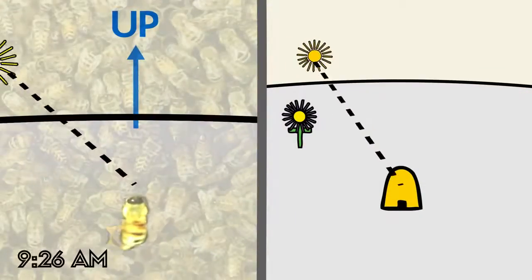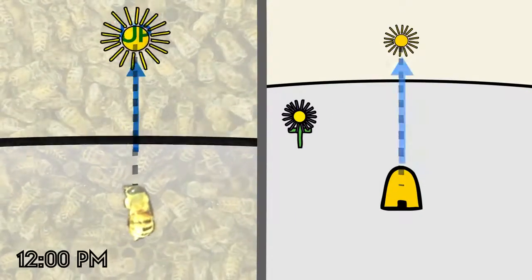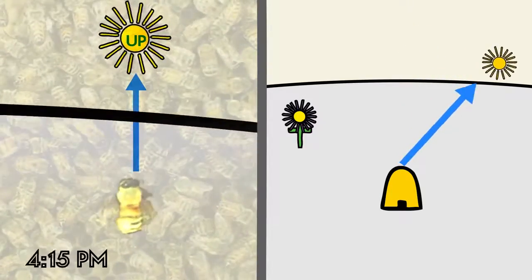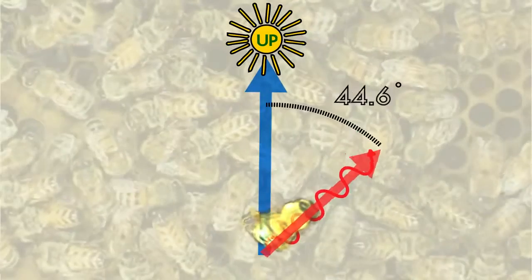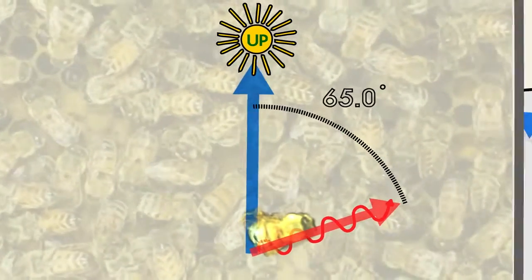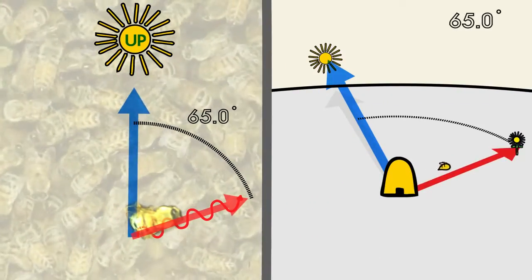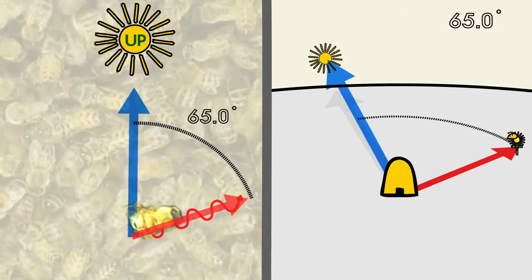Within the hive, the direction up, away from gravity, substitutes for the location of the sun. Then the angle that the bee dances compared to this up direction is the same angle a bee should fly away from the sun in order to find the target flower.